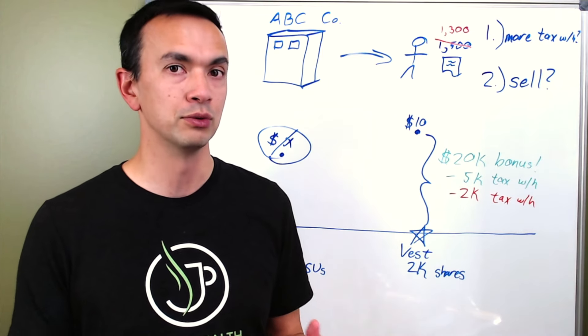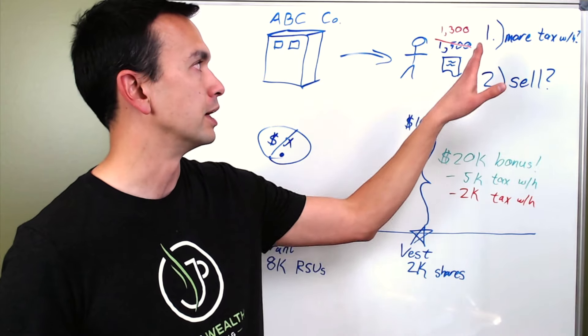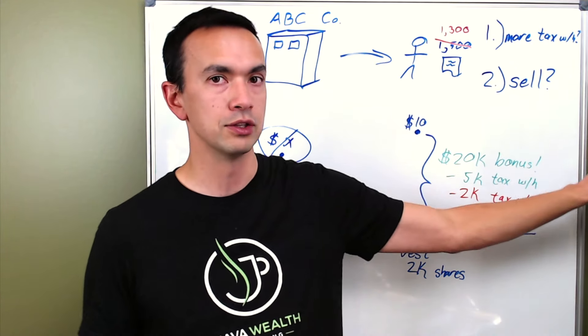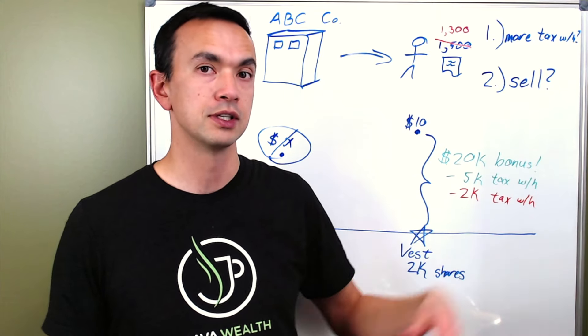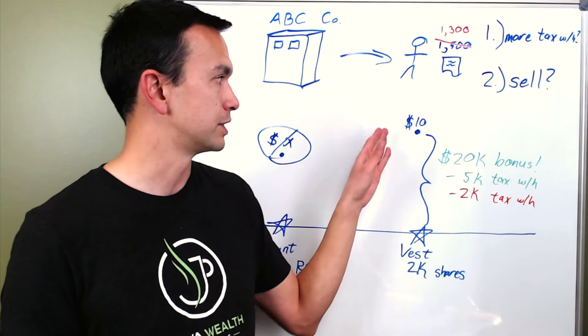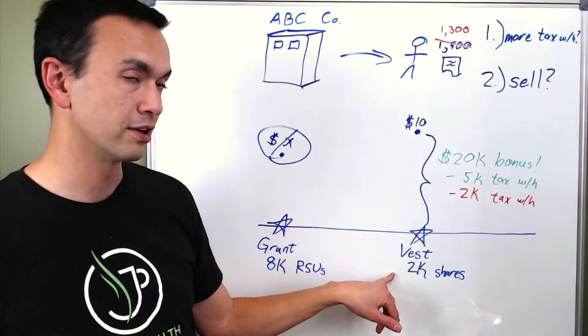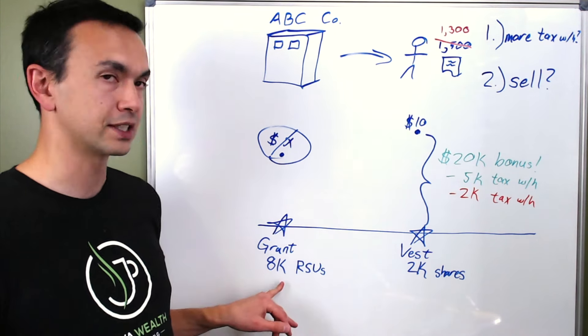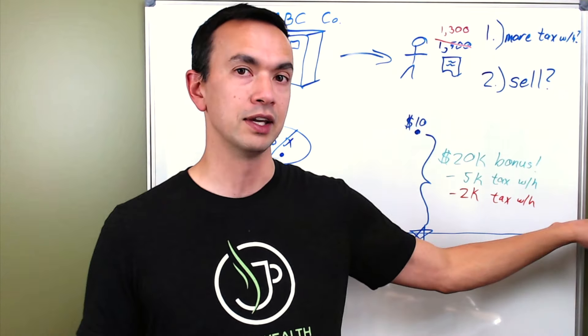And so if you're wanting to diversify away from that, then the idea would be to sell the shares of your stock and put that into other investments. And you'd still want your stock price to go up because remember in our example, we've 2,000 shares have vested, but there's still 6,000 left that are going to vest in the next three years.